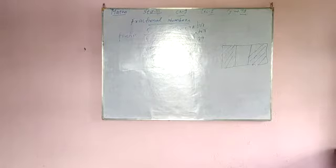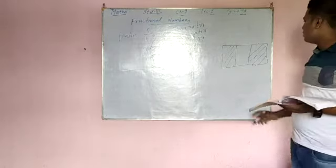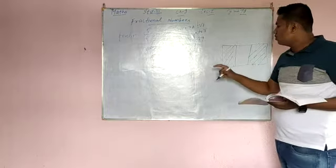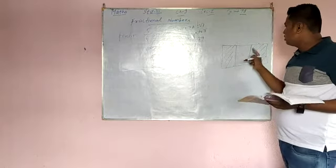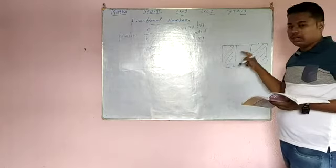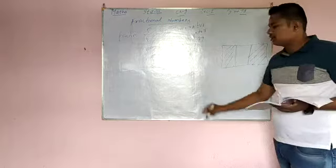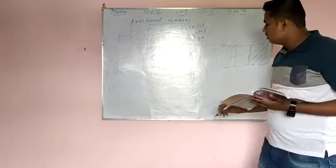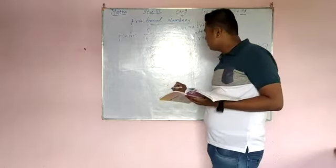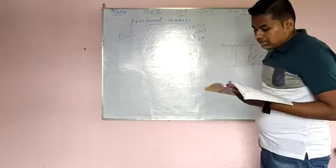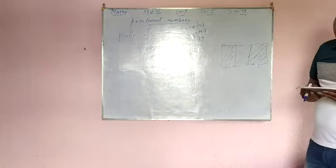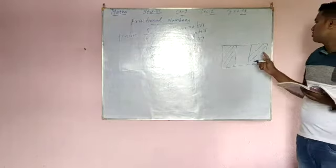We have to write the fraction. So how many parts are shaded? 1 and 2, so write 2. Total number of parts? 1, 2, 3 — so write 3. Parts 1 and 3 are unshaded. In question D: write the fraction for the unshaded part.